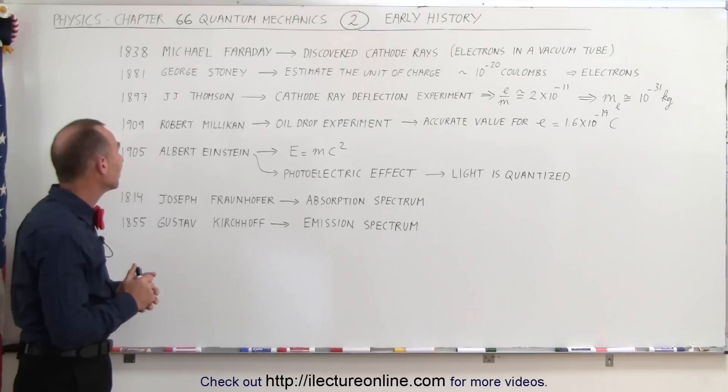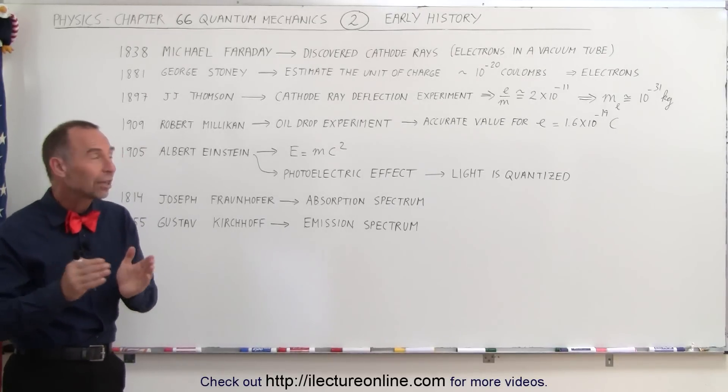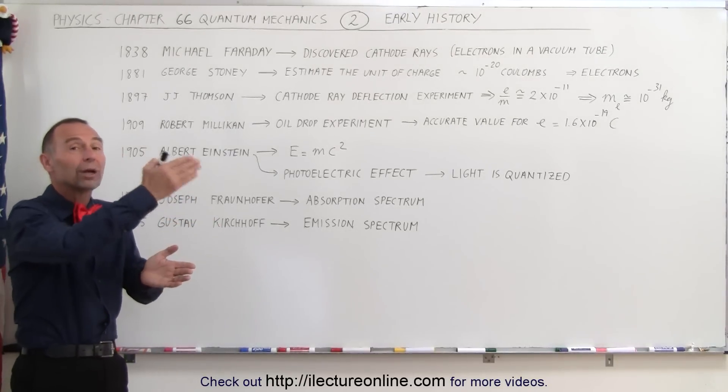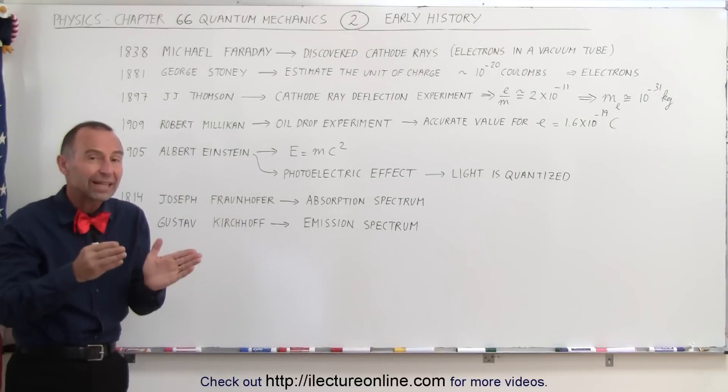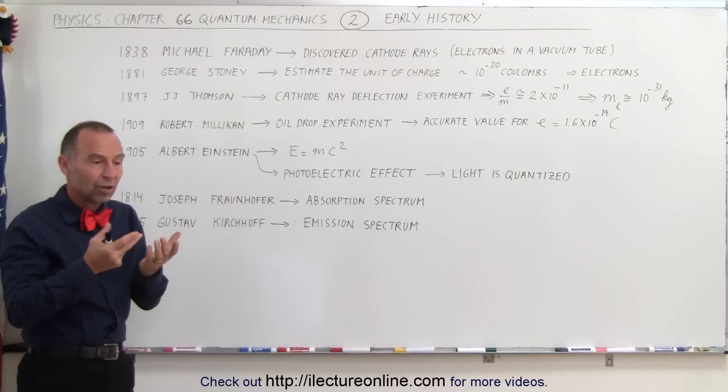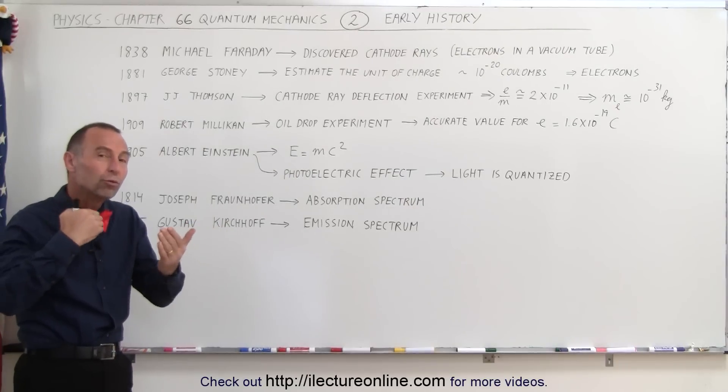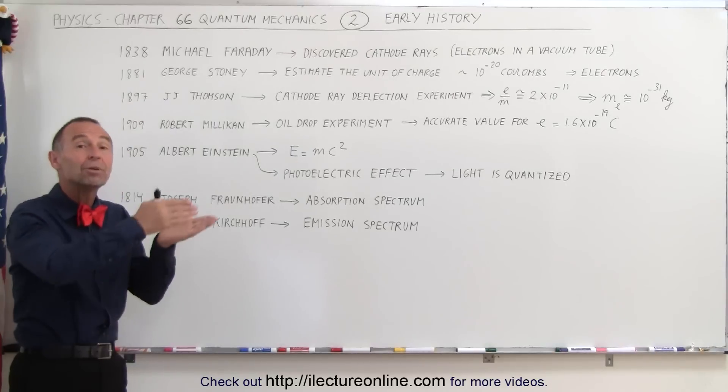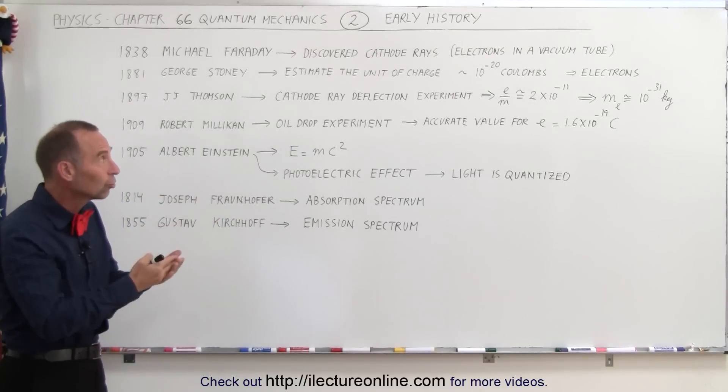Then back in 1897, J.J. Thomson was able to show that those cathode rays that were discovered way earlier actually could be deflected since these charges were electrons, and electrons have a negative charge associated with it, and when charges move through a magnetic field, they can be deflected. So they were able to deflect those charges.